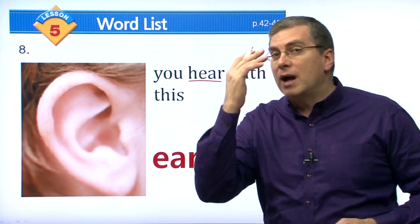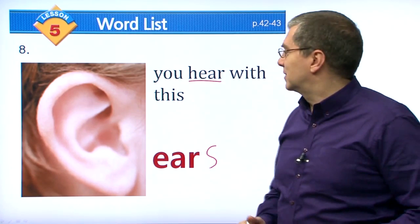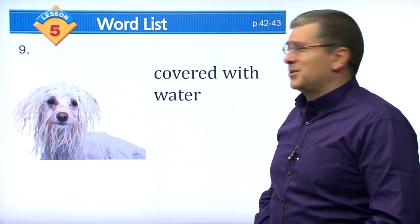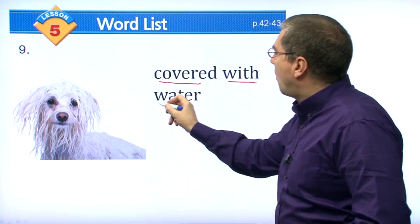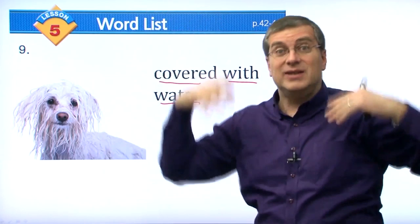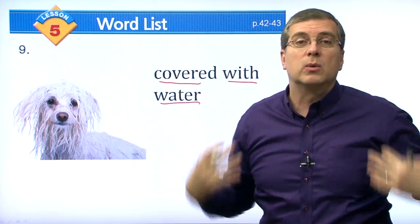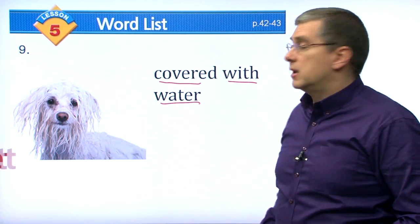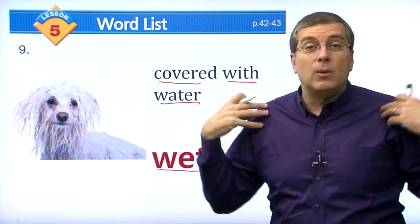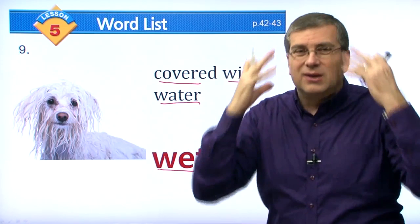Look at poor doggie — he looks so sad. He's covered with water. If he's covered with water, or you go outside in the rain without an umbrella and all the water falls on you, what do you say? The doggie is wet. We can feel if we're wet with our skin — that's one of our senses. So 'wet' means covered with water.